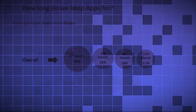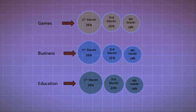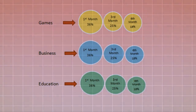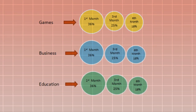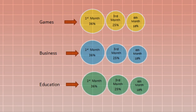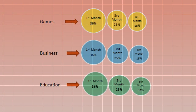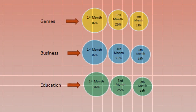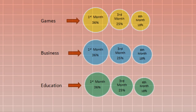Retention rates by category: Games — first month 36%, third month 25%, sixth month 18%. Business apps — first month 36%, third month 25%, sixth month 18%.